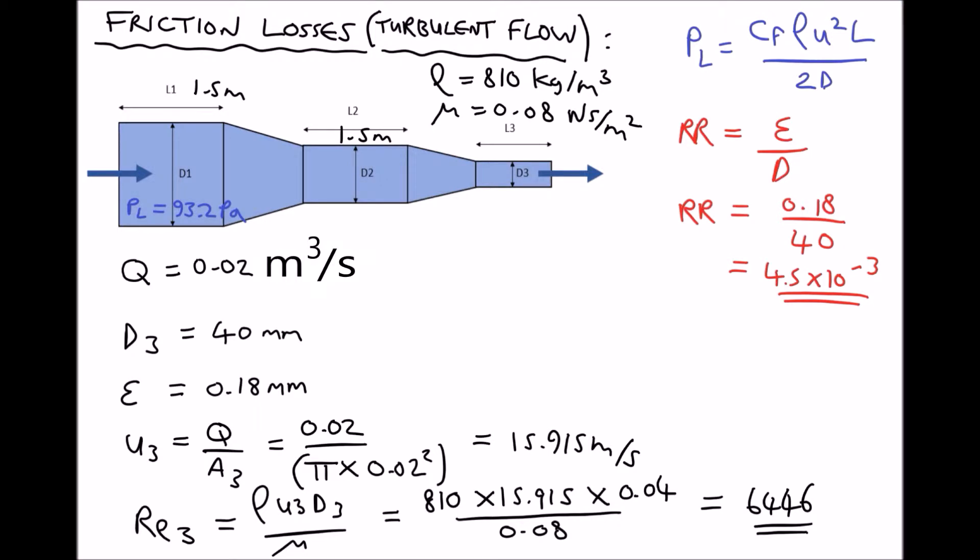So let's make a note. We have a Reynolds number of 6446, and we have a relative roughness of 4.5 times 10 to the minus 3. For simplicity, we're going to round each of those. So we're going to say that we have a relative roughness of 5 times 10 to the minus 3, or 0.005, and a Reynolds number of 6400. Let's go to our Moody diagram, and then we can determine our coefficient of friction for those two values.